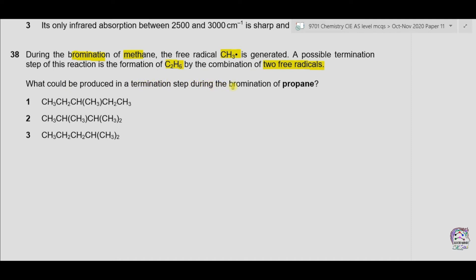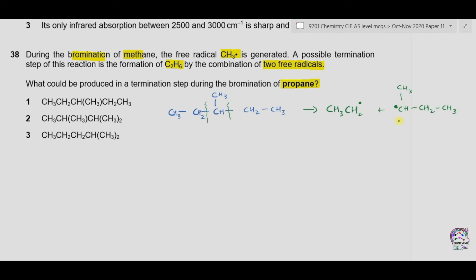Looking at option 1, we can draw the structure: a carbon chain with a methyl group attached, along with CH2 and CH3 groups. The radicals that would form this compound would be the CH3CH2 radical and the CH3CH2CH2 radical. As both radicals are unequal — one is an ethyl radical and one is a propyl radical — option 1 is incorrect.